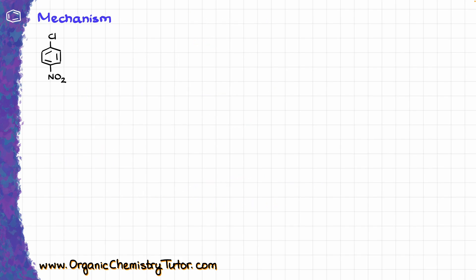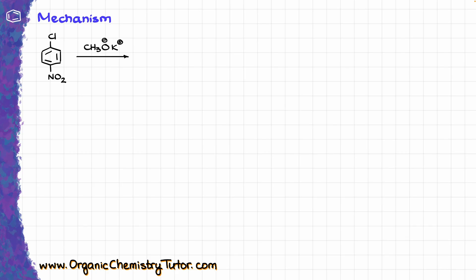Let's talk about the mechanism of nucleophilic aromatic substitution. I'm going to take this aromatic compound with a nitro group and chlorine sitting para to each other, and treat it with potassium methoxide. In the preliminary analysis, chlorine is going to be our leaving group, and the methoxide is our nucleophile. The reaction starts by taking our nucleophile and doing the nucleophilic attack, giving a negatively charged intermediate.